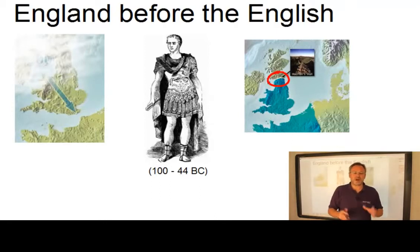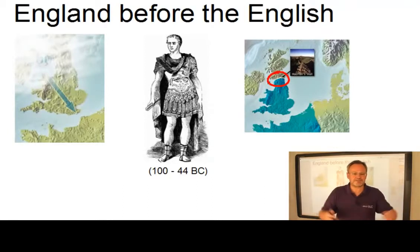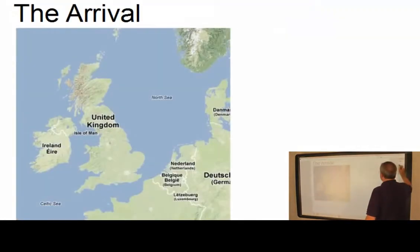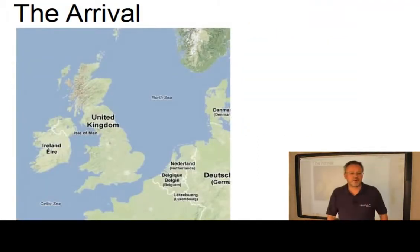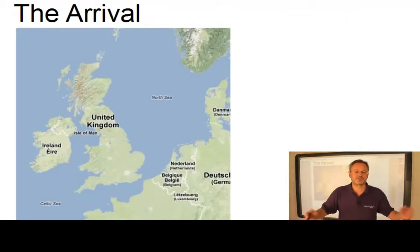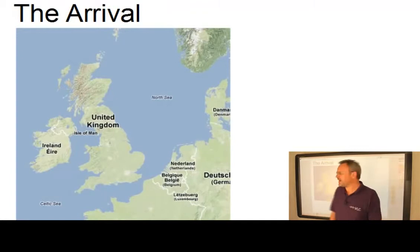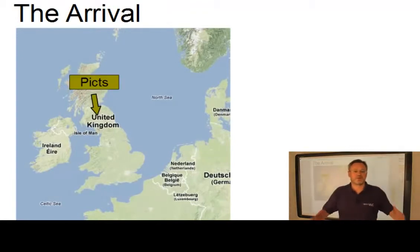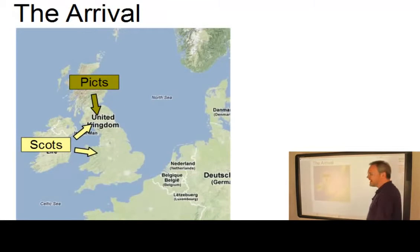England became Rome's westernmost outpost and was gradually Romanized. There were Roman public baths, theatres, villas with central heating and running water. In 410 after Christ, Roman legions were withdrawn from Britain, because Rome itself was under huge pressure from invasions. The legions left only chaos. Picts raided the country from the north. The Scots came from Ireland.